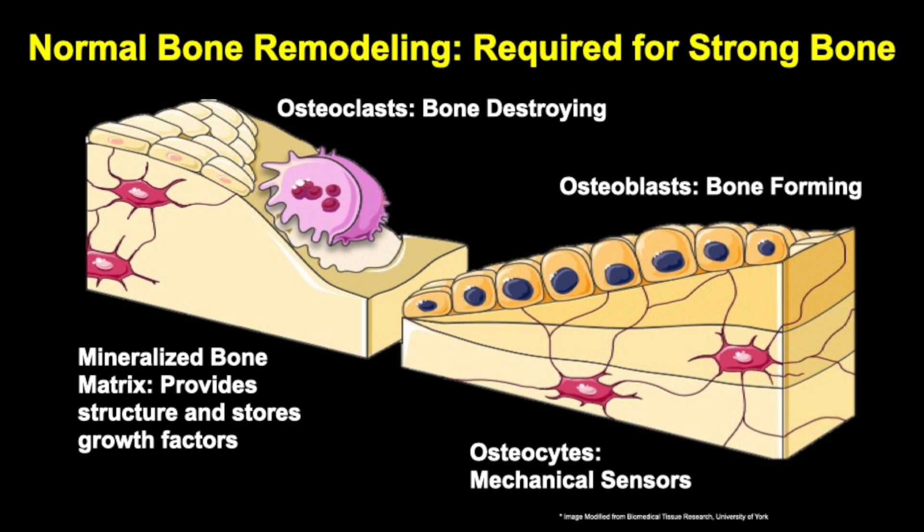And finally, the mineralized bone matrix, or the hard part of the bone, provides structure for the body, but it also stores growth factors in the body, which, as we'll talk about later, can stimulate cancer cells to grow.